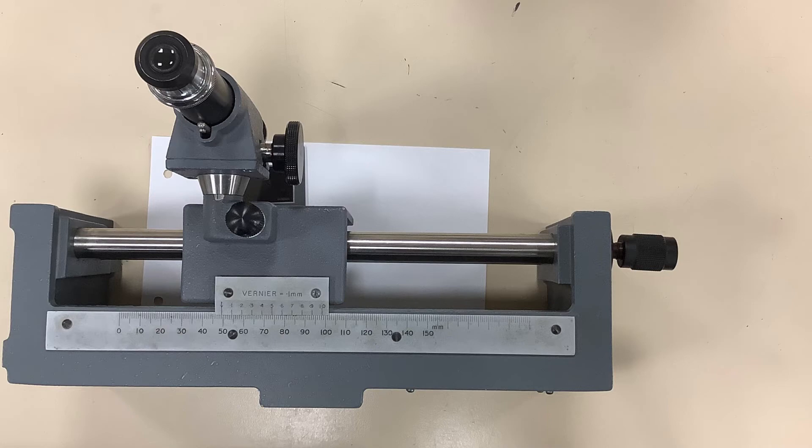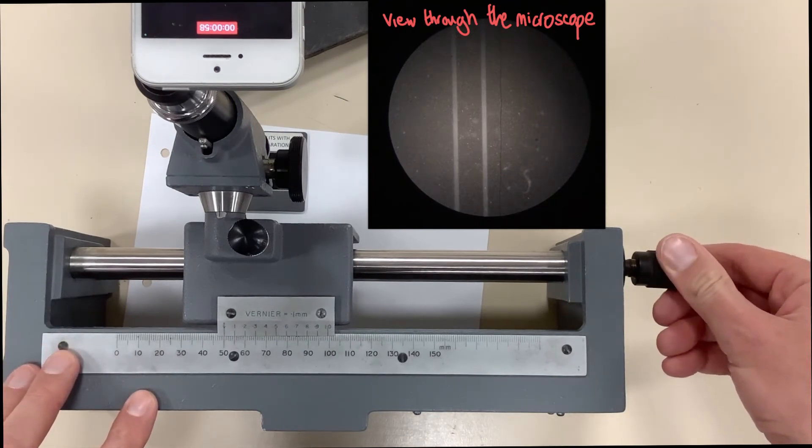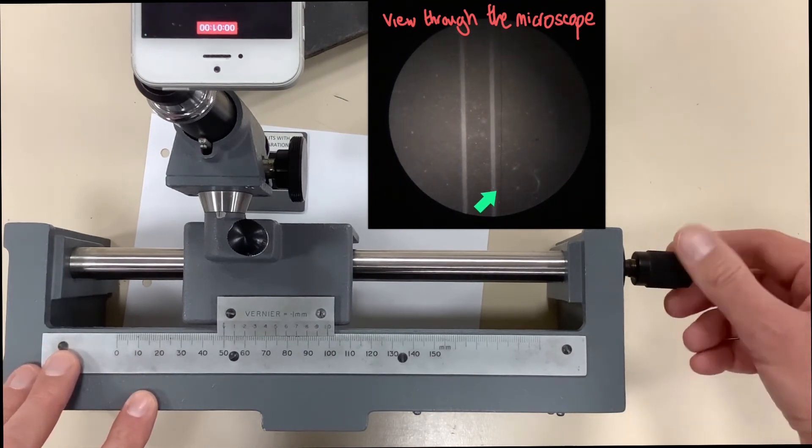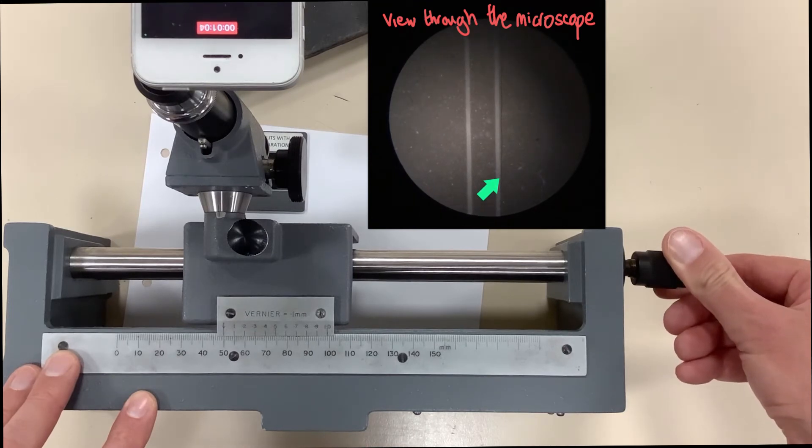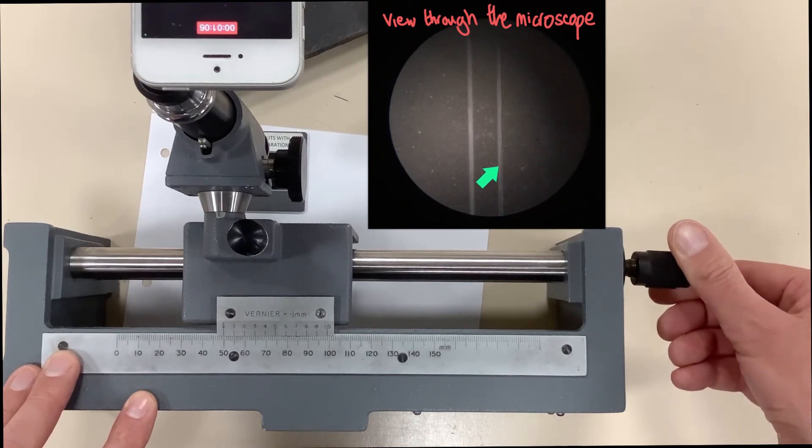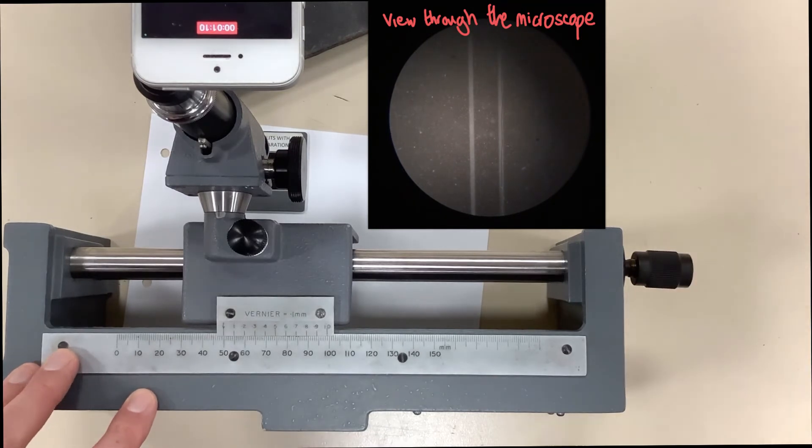The first thing that we're going to do is turn this until the view through the viewfinder has the piece of wire perfectly lined up with the first slit, which I would say is about there.